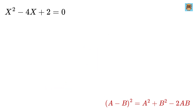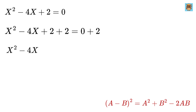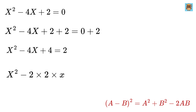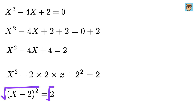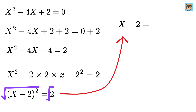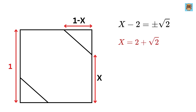This is a quadratic equation. Adding 2 to both sides gives X² minus 4X plus 4 equals 2. This can be written as (X minus 2)² equals 2, which is in the (A minus B)² form. Taking the square root on both sides gives X minus 2 equals plus or minus the square root of 2, so X equals 2 plus root 2, or X equals 2 minus root 2.